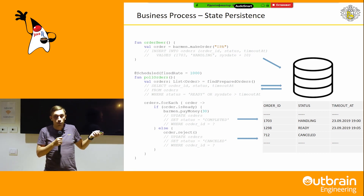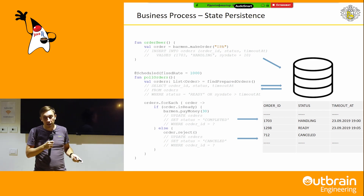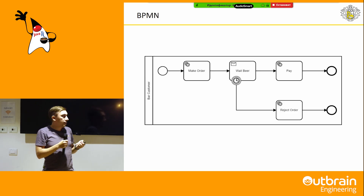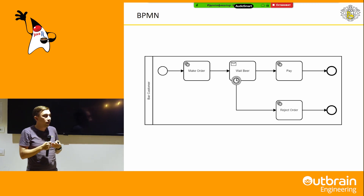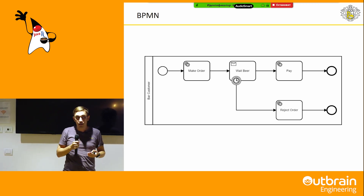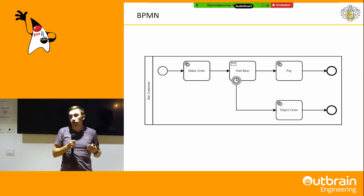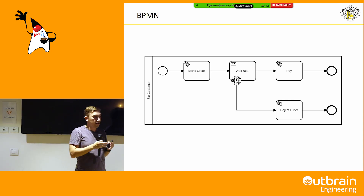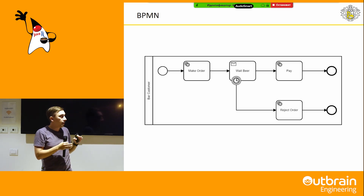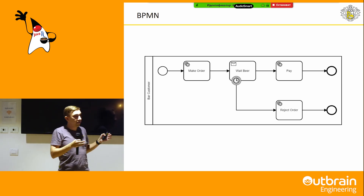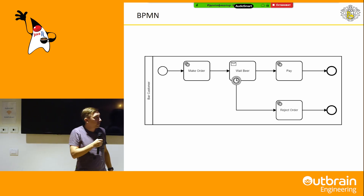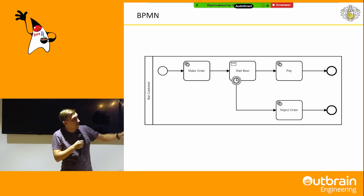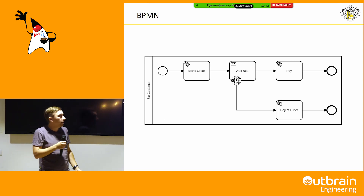This is quite a good solution, but not all business processes are as simple as our beer ordering example. For business process description and specification, we can use BPMN. BPMN is a standard developed by the OMG Group — it's a really big topic with a lot of different kinds of steps. I won't talk about it in detail today, but here is our business process represented as a BPMN diagram. It has the same steps and looks very clear.